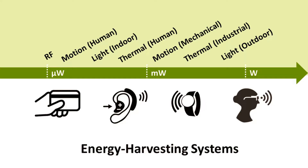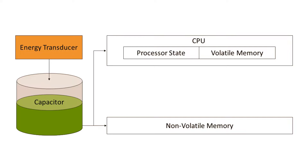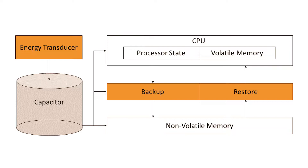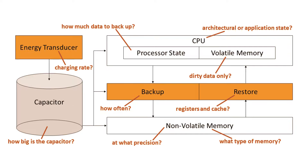Surprisingly, these complex trade-offs are no different from the ones we face when designing energy harvesting systems. How can we build efficient processor architectures when power losses are constantly interrupting our program? We need to keep backing up our data, but how should we do it? How much data needs to be saved? How often? What type of memory should we use? There are so many variables to consider, and it's not clear how they all interact.